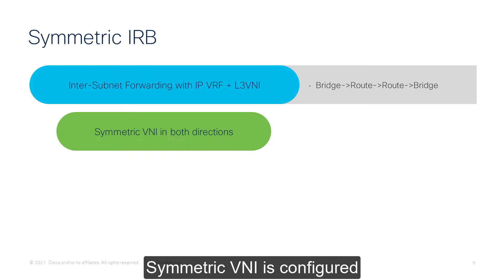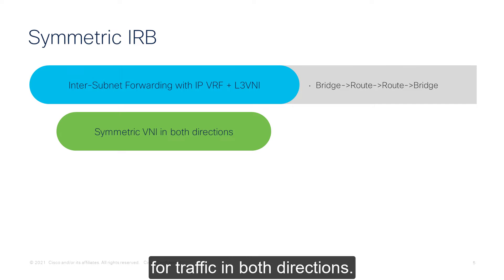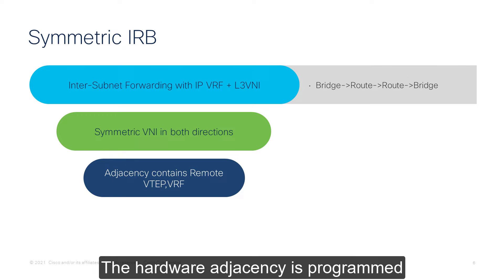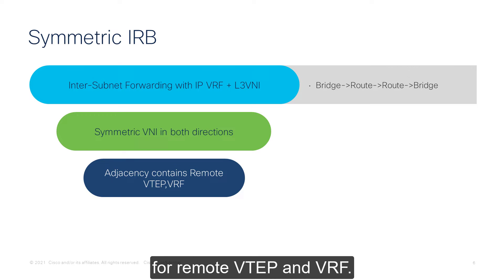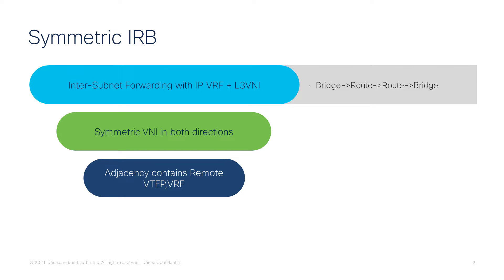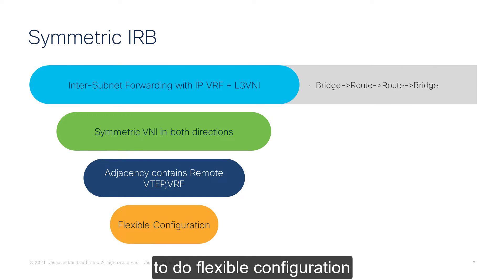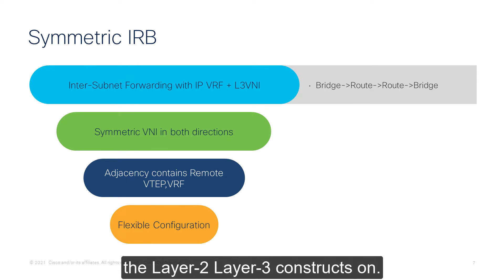Symmetric VNI is configured in the same manner for traffic in both directions. The hardware adjacency is programmed for the remote VTEP. This mode gives you an option to do flexible configuration because you decide which VTEP you have to configure the layer 2 and layer 3 constructs on.